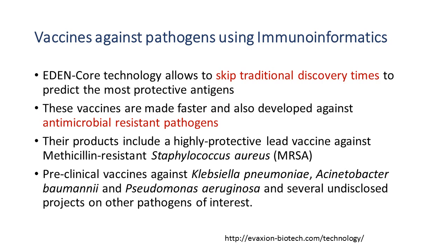One highly notable target is MRSA — Methicillin-Resistant Staphylococcus aureus. As many research units around the world are working on antimicrobial resistance, this represents a key strategy of developing vaccines against antimicrobial-resistant pathogens. In addition to antimicrobial resistance, they have developed several vaccines at key clinical stages, including against Acinetobacter baumannii and Pseudomonas aeruginosa, with several other pathogens under development.